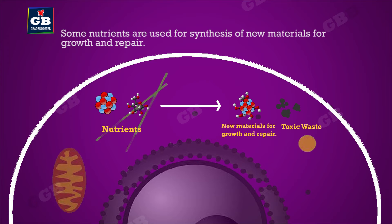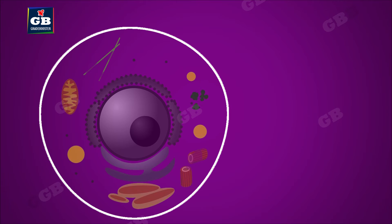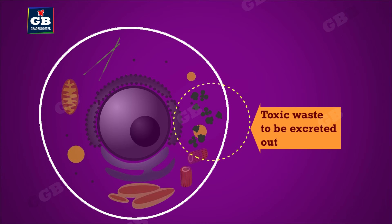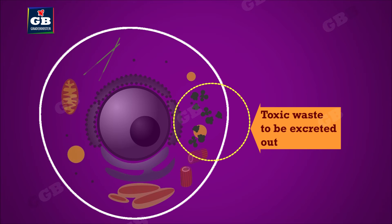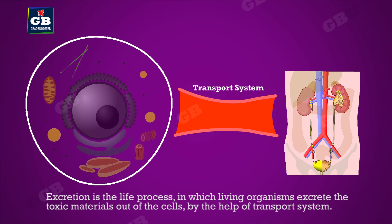While carrying out the above activities, cells generate certain molecules which are toxic and need to be excreted out of the body. Excretion is the life process in which living organisms excrete toxic materials out of the cells by the help of the transport system.